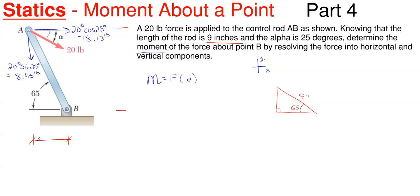So our horizontal distance would just be 9 inches times the cosine of 65 degrees, which gives us 3.80 inches. And then our vertical dimension would be 9 times the sine of 65 degrees, which would give us 8.16 inches in length in that vertical direction.